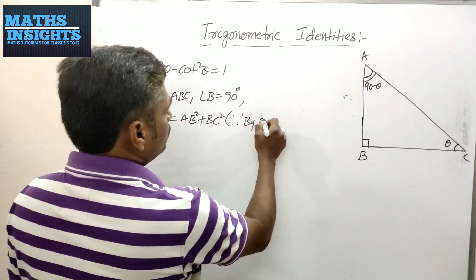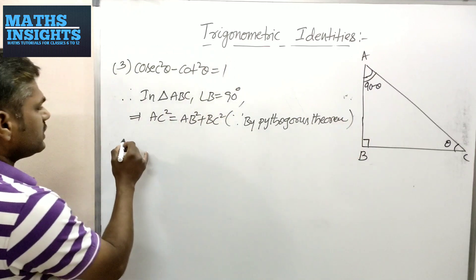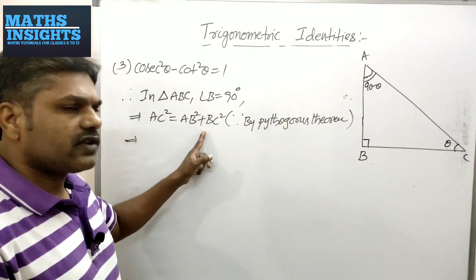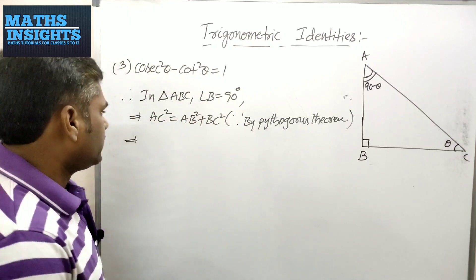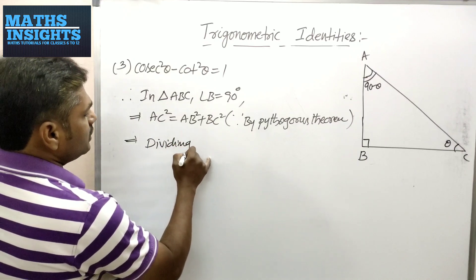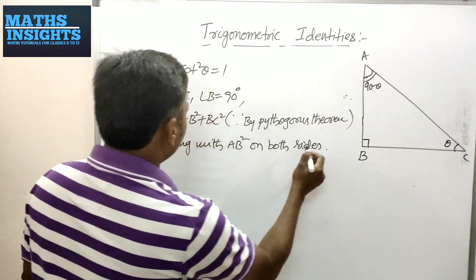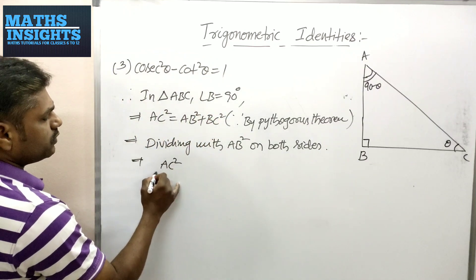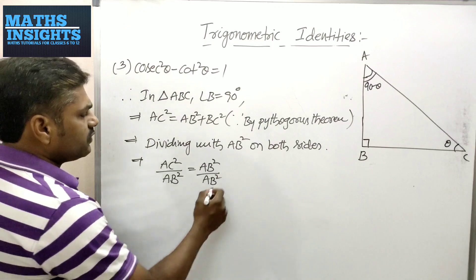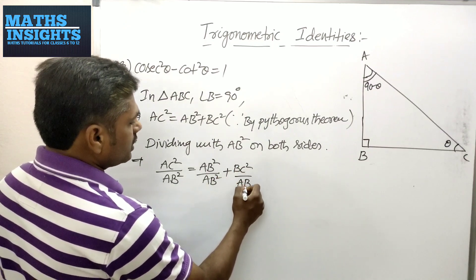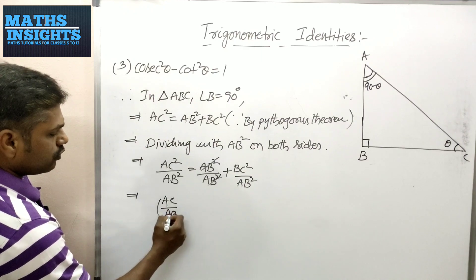We apply Pythagoras theorem: AC² = AB² + BC². Now, in the previous identities we divided by AC² and BC² respectively. This time we will divide the equation by AB² on both sides. Dividing by AB² gives: AC²/AB² = AB²/AB² + BC²/AB². Cancelling AB²/AB² gives 1. So: (AC/AB)² = 1 + (BC/AB)².